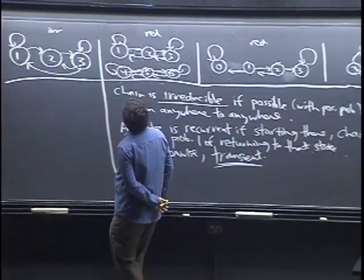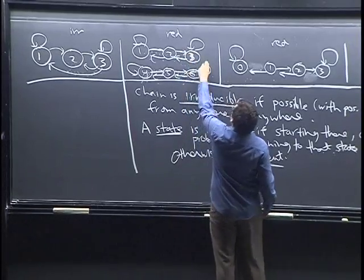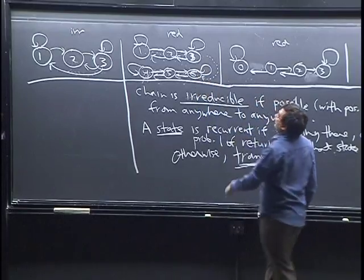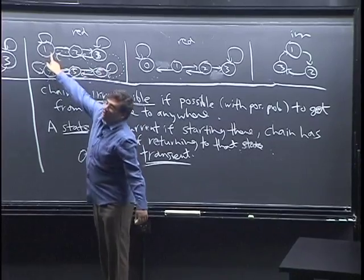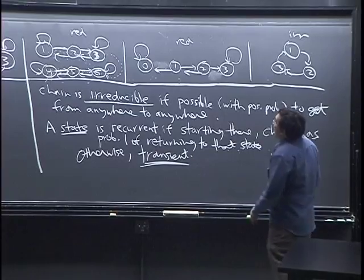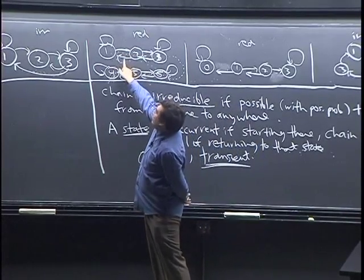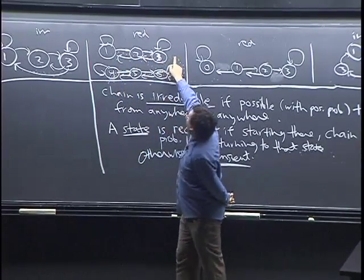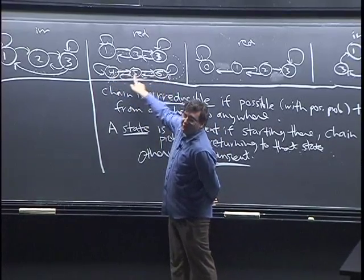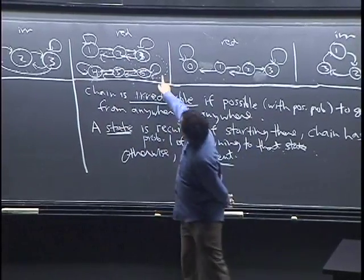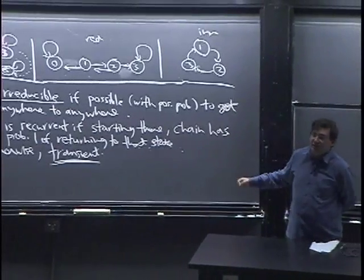If we modify the two-group chain by adding an extra edge from state three to state six, it's still not irreducible because you can't get from state four back to state one. But now states one, two, and three have become transient. If you start there, the chain may wander around for years, but eventually it's going to cross that arrow to the lower group. Then there's no turning back — the rest of its infinite life is in states four, five, and six. Those three states would be transient, and four, five, six would be recurrent.